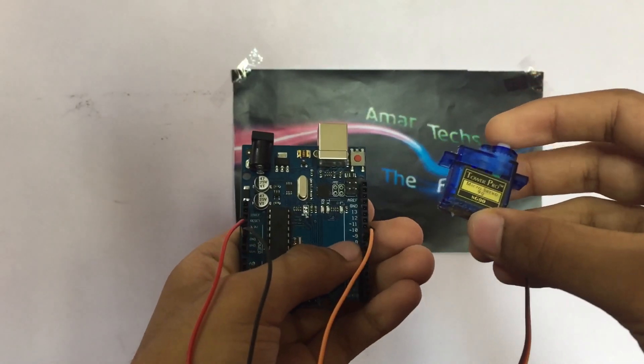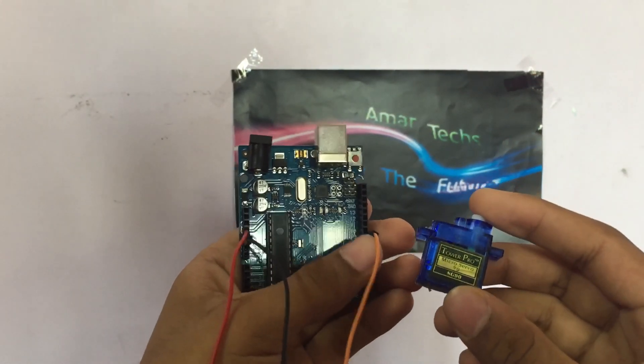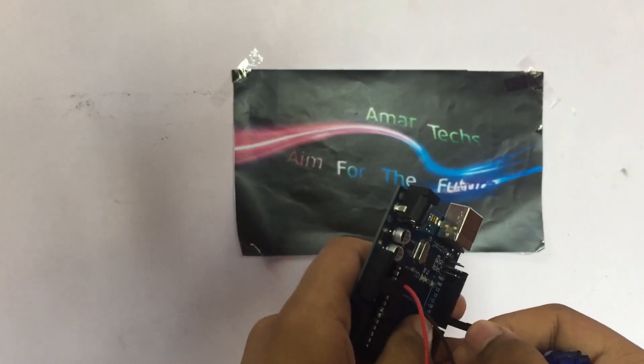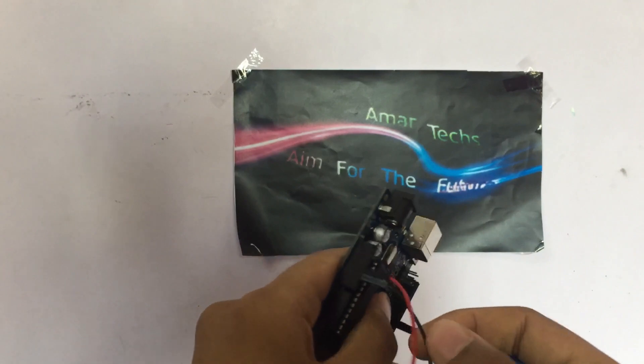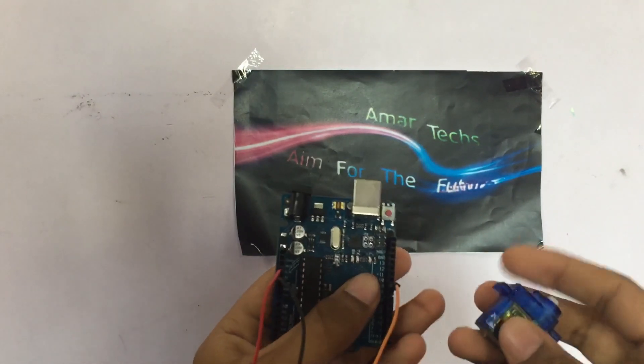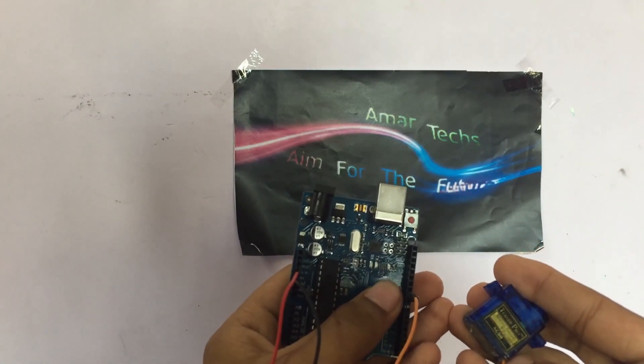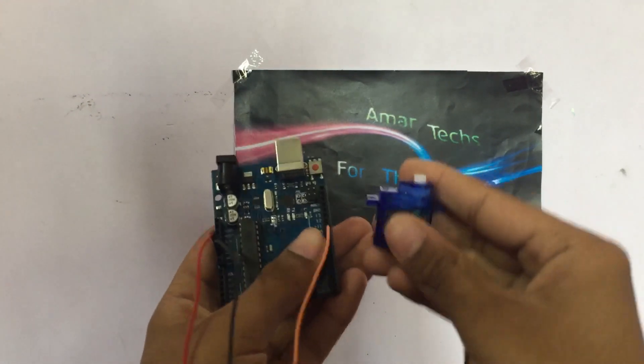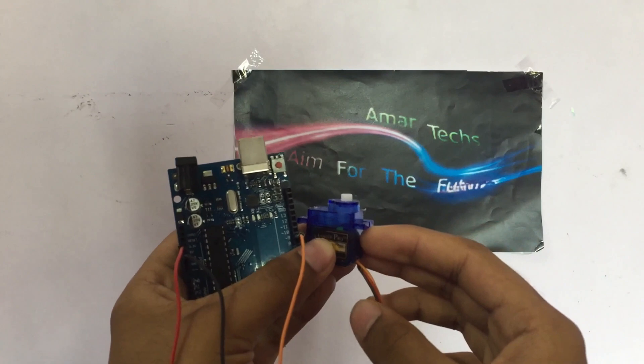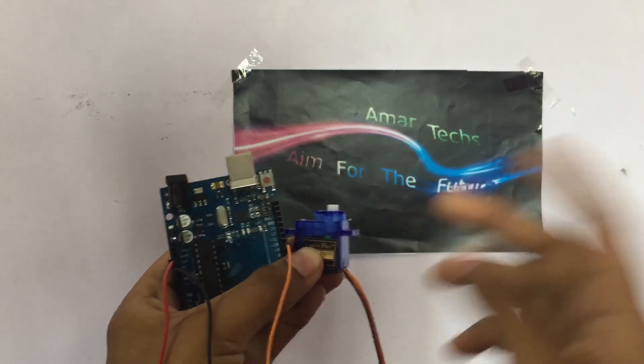The orange color pin or the signal pin of the servo motor goes to pin 9 of the Arduino Uno. Then the GND of the servo motor goes to the GND of the Arduino Uno. Then the VCC goes to the 5 volt pin of the Arduino Uno. And our connections are done, so let's get to the codes right away.